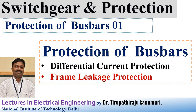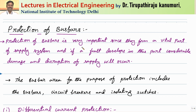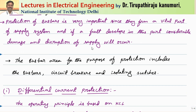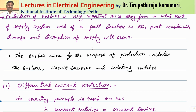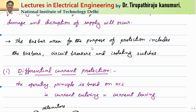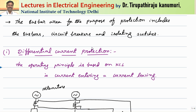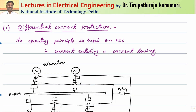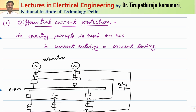Hi all, today we are going to discuss about protection of busbars. The busbars play a very important role since they form the vital part of the power systems because they are used for interconnecting two different systems, and if a fault develops in this part, it leads to huge damage. The different types of protections used for busbars are differential protection as well as frame leakage protection. Let us see each one of them in detail. First we will start with the differential current protection.